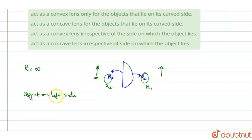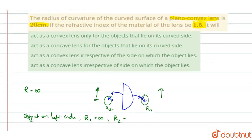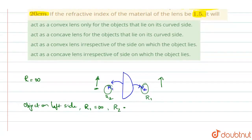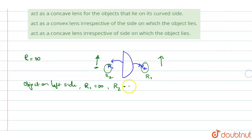If the object is on the left side, R1 equals infinity. R2, the radius of curvature given as 20 cm, we will take as -20 cm.